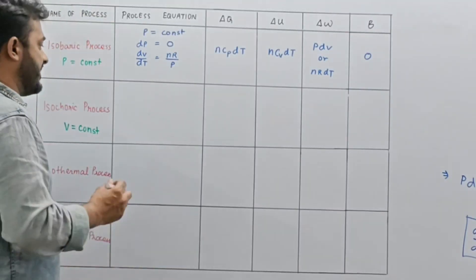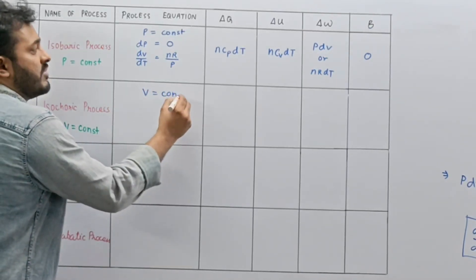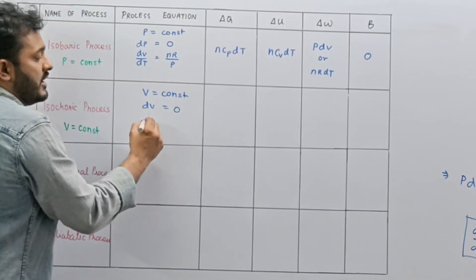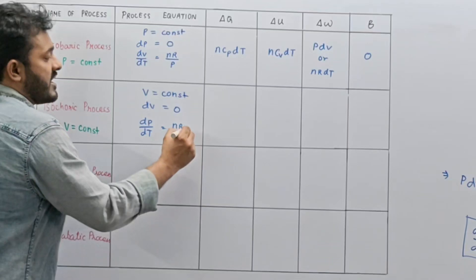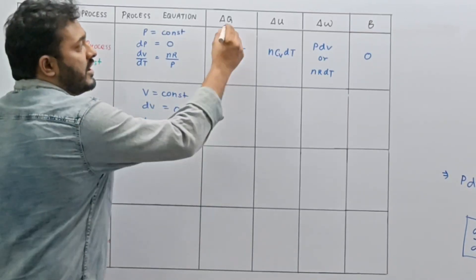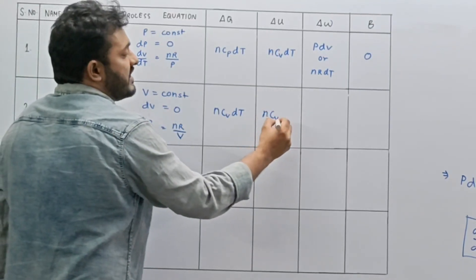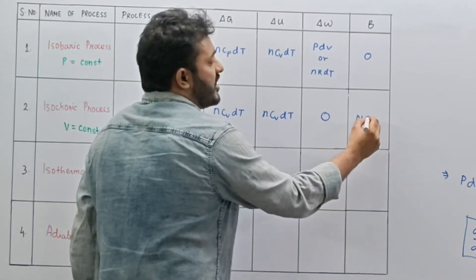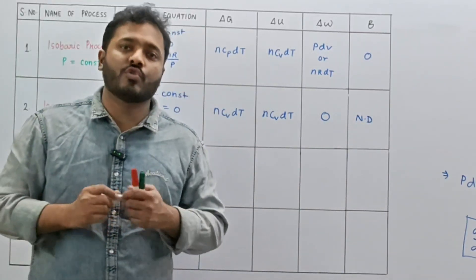Let us fill in the table for the isochoric process. Volume is constant, DV equals 0, and the differential equation DP/DT equals NR/V. This was all about the isochoric process.